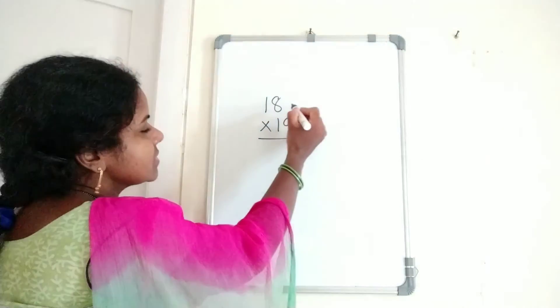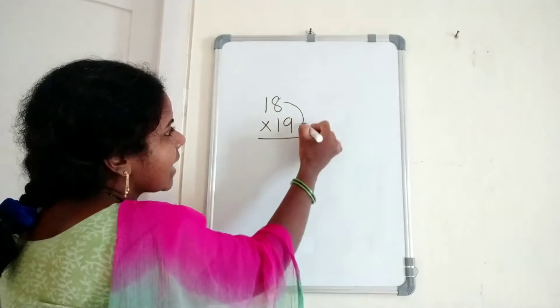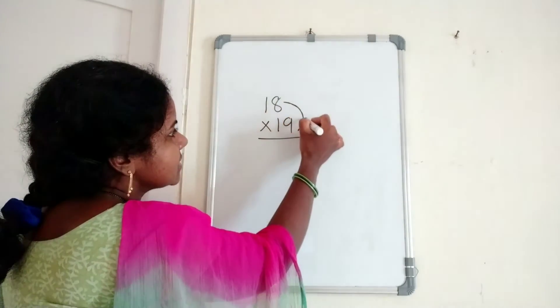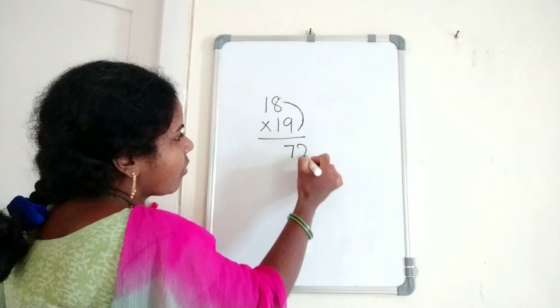18 times 19: First, multiply the ones place digits. 8 times 9 equals 72.